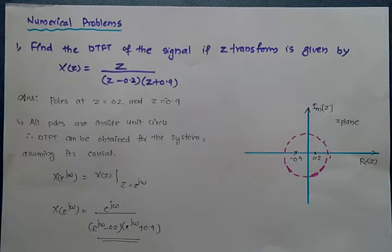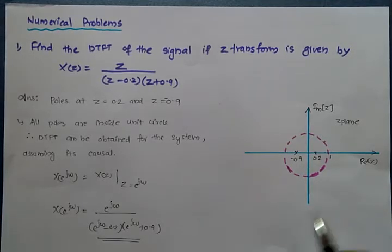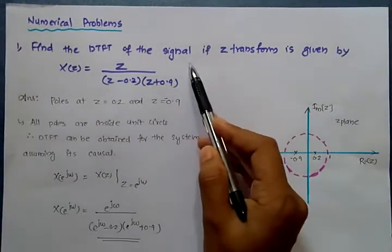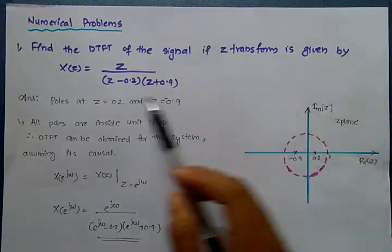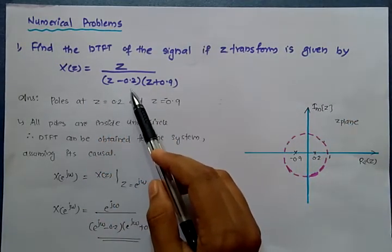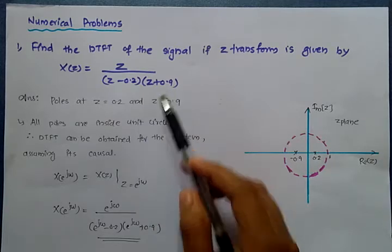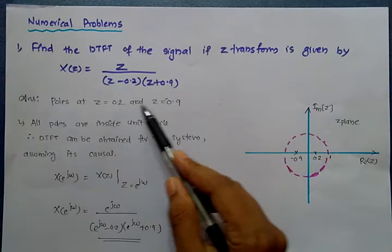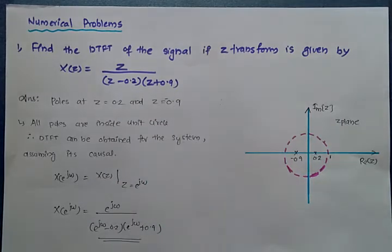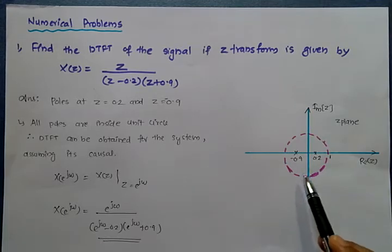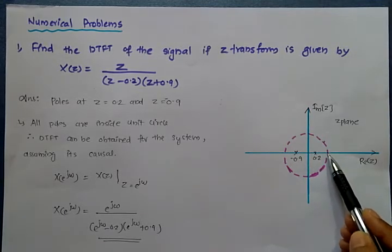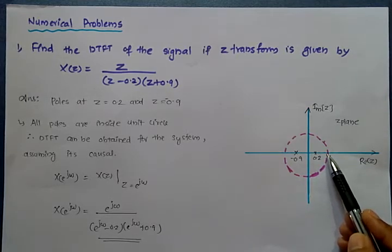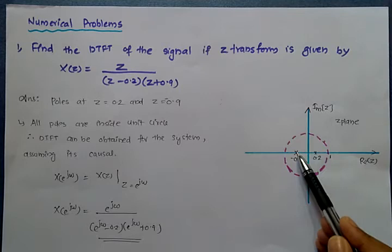Now we move to numerical examples. The first question is: find the DTFT of the signal if the Z-transform is given by X(Z) = Z divided by (Z minus 0.2)(Z plus 0.9). From this equation, the poles are at Z = 0.2 and Z = minus 0.9. If we draw the Z-plane with the unit circle and mark both poles, they lie within the unit circle.